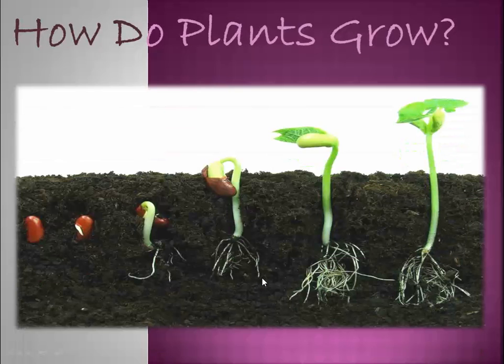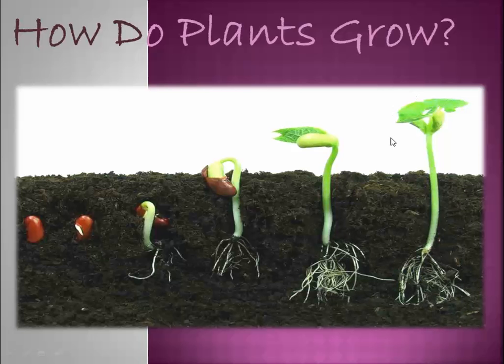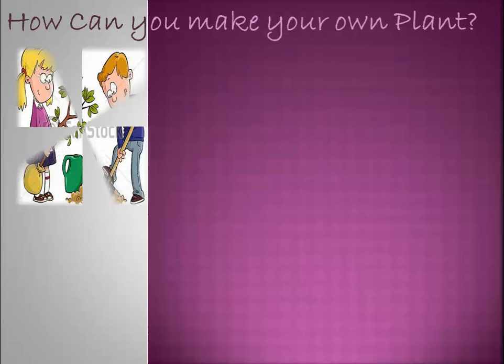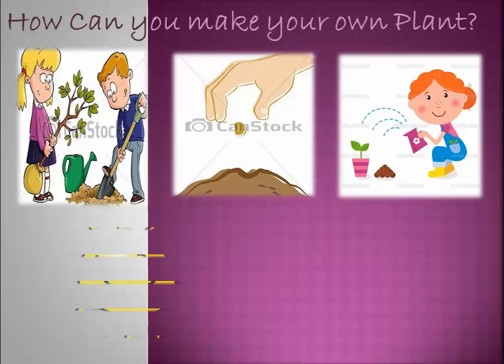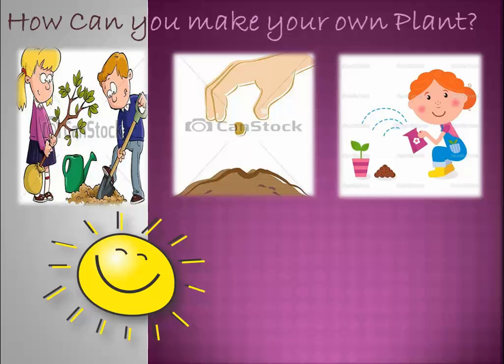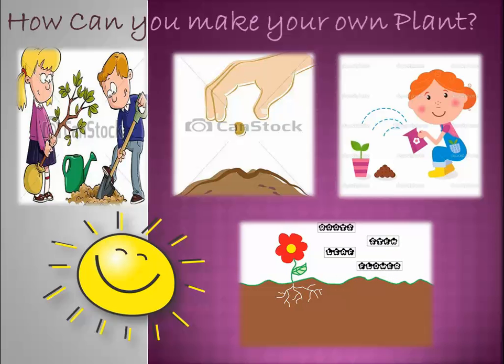We also learned how plants grow. It starts with a small seed, then a small root, and then the root begins to expand to form the stem. After that comes the leaf and then the flower appears. To make your own plant: take a little hole, put a seed, give it some water, expose it to sunshine, and the flower will appear.